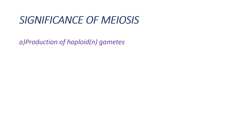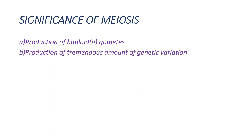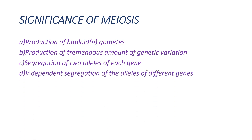The significance of meiosis: first, meiosis helps in the production of haploid gametes so that fertilization restores the normal somatic chromosome number. Second, meiosis helps in producing a tremendous amount of genetic variation through crossing over. Third, it helps in segregation of two alleles of each gene due to separation of sister chromatids. Fourth, there is independent segregation of alleles of different genes due to separation of homologous chromosomes. Fifth, recombination between linked genes is also due to meiosis. Thank you for watching and please keep supporting Science Made Easy.